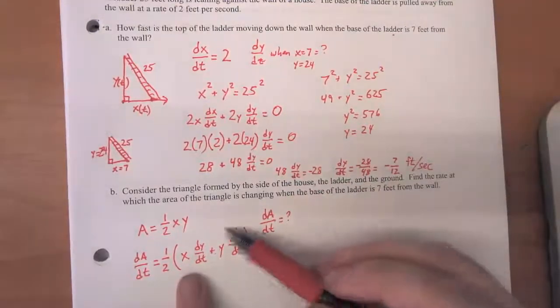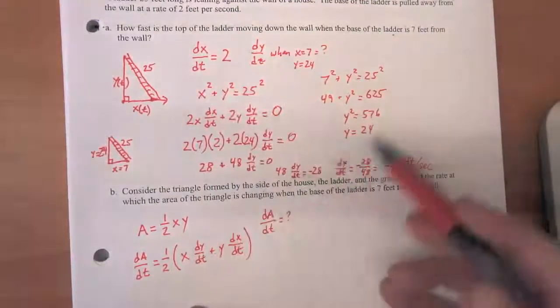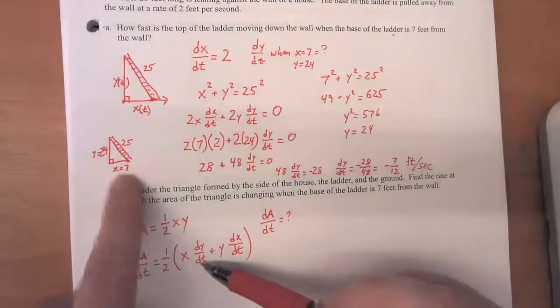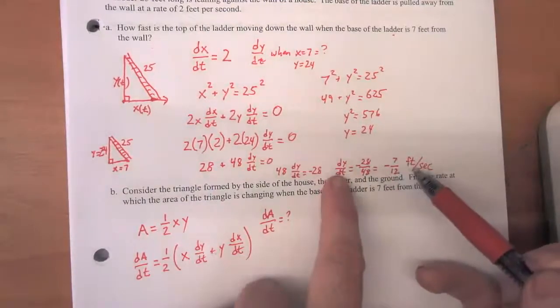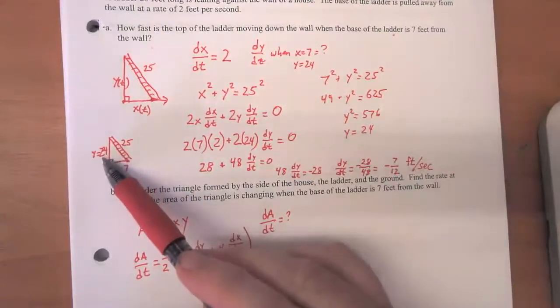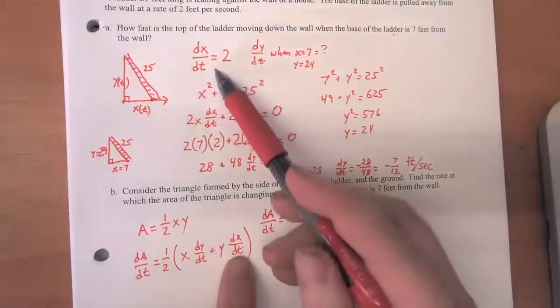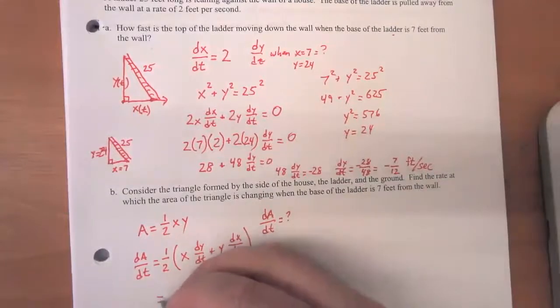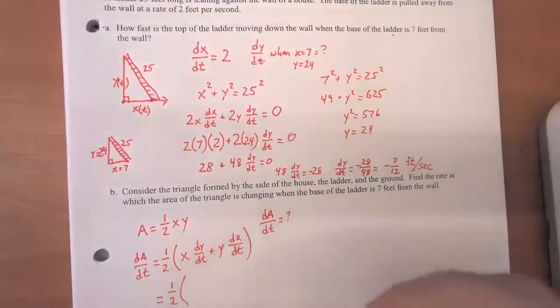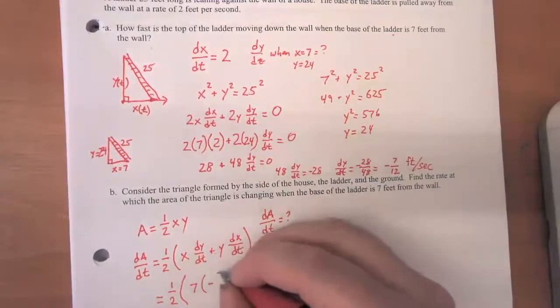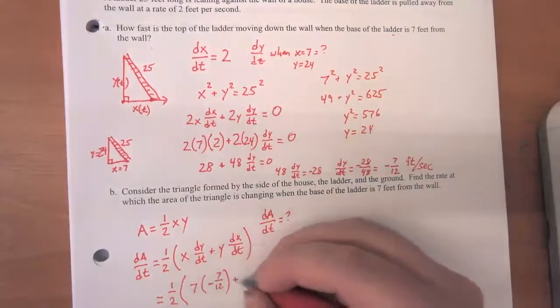And fortunately, we know all of these values from the side of the problem. So x is 7. They told us that. dy/dt, we solved it over here. It was negative 7/12. Y is the height of the ladder at this moment in time, which we decided was 24 feet. And dx/dt, they told us that's increasing at 2 feet per second. So we just substitute all of those values in. So one half times 7 times negative 7/12 plus 24 times 2.